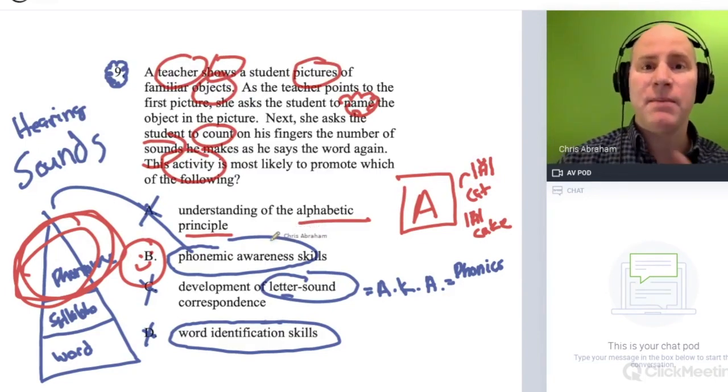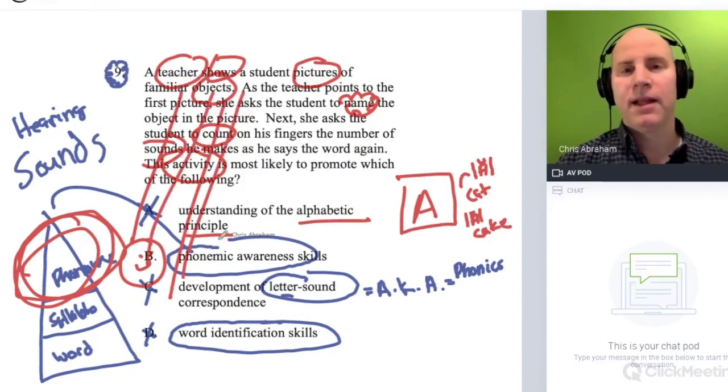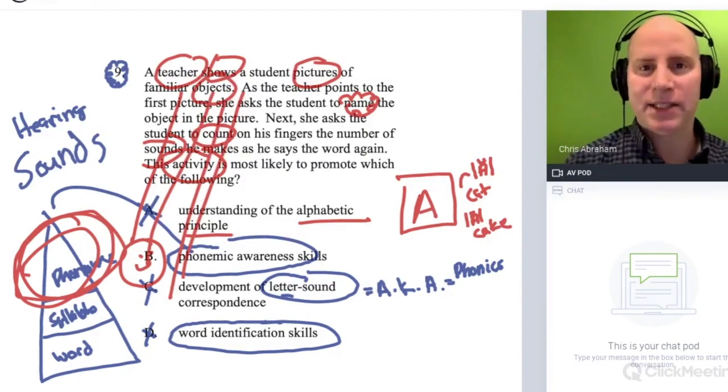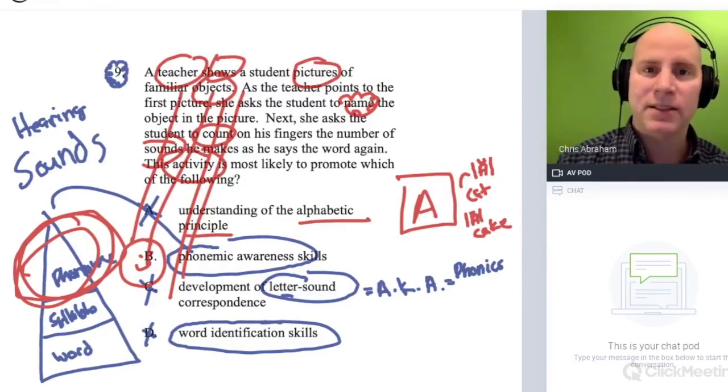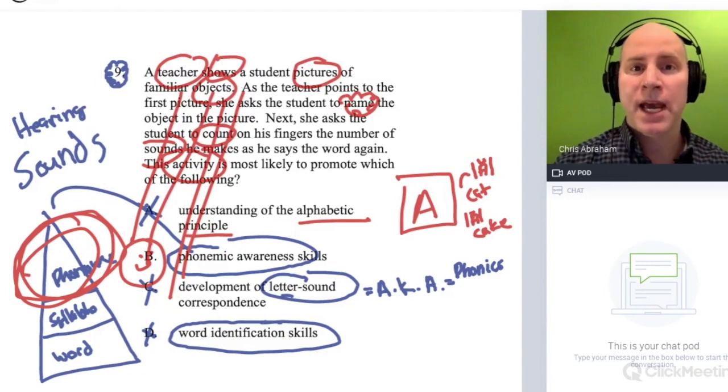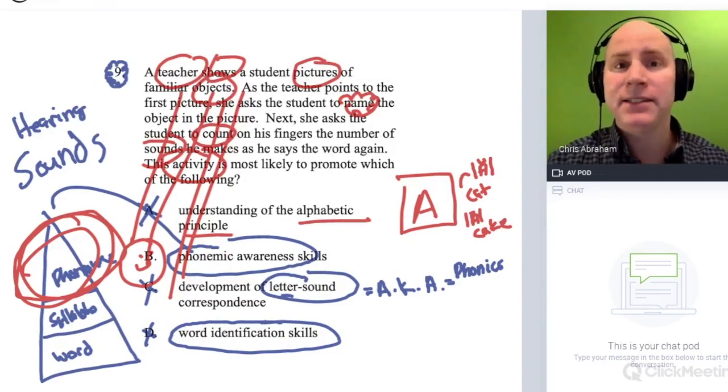When you read this question, you say, 'You know what, this is a sound activity, a phonemic awareness activity. The answer's got to be B.' Lots of different ways to analyze this question. OK, it's a great question because you get that practice of seeing why it's B, and also I want you to go back and realize why it can't be A, C, or D. Great problem, let's continue.